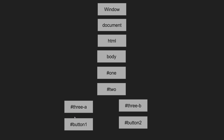Whenever an event occurs, it goes through two phases. The first is the capturing phase — catching that particular element. After capturing the element, it propagates back up to the window; this is called the bubbling phase. During the bubbling phase, if any parent element also has a click event listener attached, that click event will also fire — this is called event bubbling.